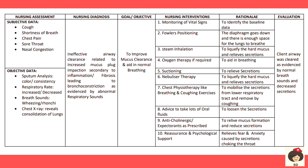The first nursing diagnosis is ineffective airway clearance, related to increased mucus plug impaction secondary to inflammation and fibrosis, leading to bronchoconstriction, as evidenced by abnormal respiratory sounds. For a patient to receive oxygen, the airway must be clear, so the first priority is airway clearance. The airway can be obstructed by mucus plugs, inflammation, or fibrosis, causing bronchoconstriction, identified by abnormal respiratory sounds.